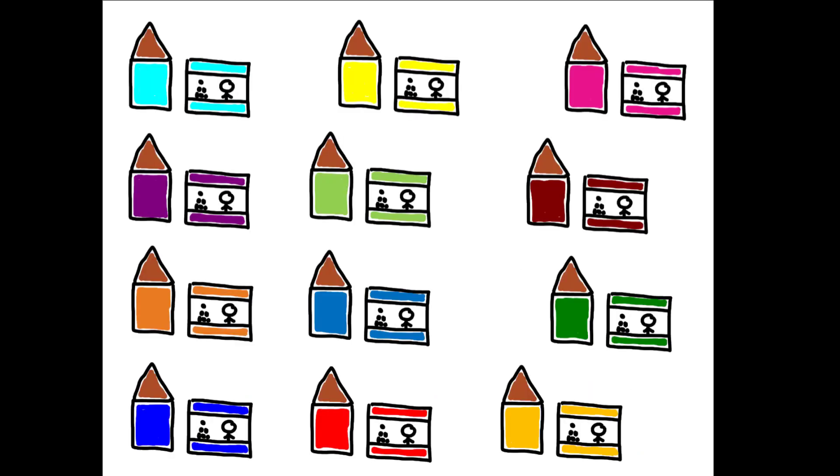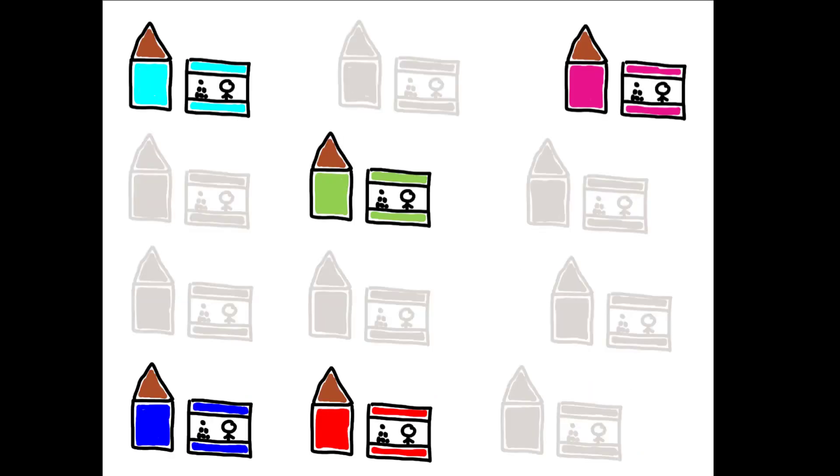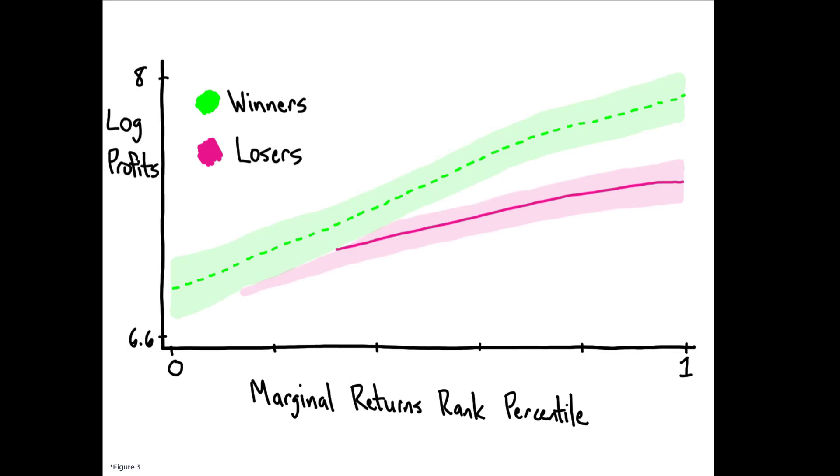The results of this experiment show first that community members can identify high-ability entrepreneurs with remarkable accuracy. This figure shows log profits measured after the completion of the experiment plotted against the marginal returns ranking given to each entrepreneur by their group members. Looking separately at lottery winners and losers, we see that marginal returns rank is positively correlated with the level of profits in both groups.